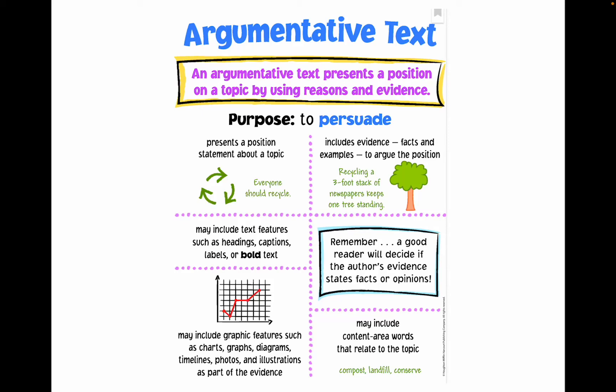An argumentative text presents a position on a topic by using reasons and evidence. The purpose of an argumentative text is to persuade the reader. Another word for an argumentative text is a persuasive text. The writer will try to get the audience to believe or do something by using reasons, evidence, and facts to argue their position or perspective.